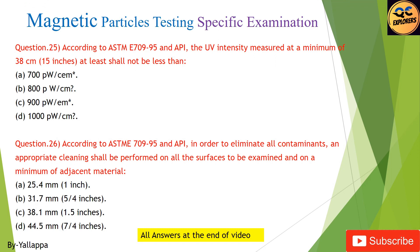Question 25: According to ASTM E709-95 and API, the UV intensity measured at a minimum of 38 cm shall not be less than: (A) 700 µW/cm²; (B) 800 µW/cm²; (C) 900 µW/cm²; (D) 1000 µW/cm².